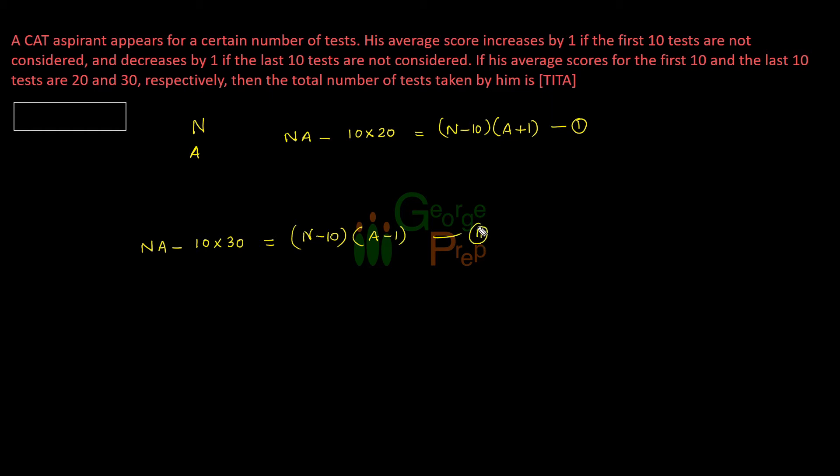Now I will simplify these two equations. This becomes NA minus 200 equals, let me expand this, NA plus N minus 10A minus 10. NA gets cancelled and I take 10A minus N on this side and 200 on the other side. That will be 200 minus 10 or 190.